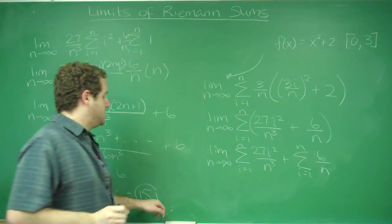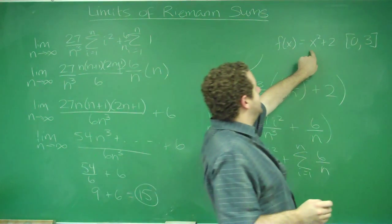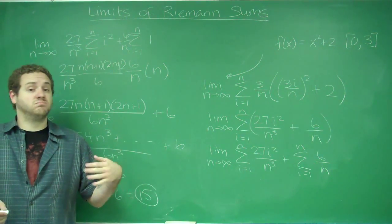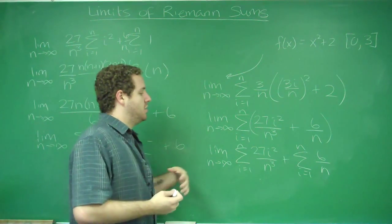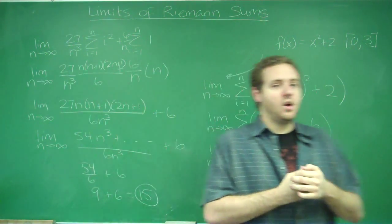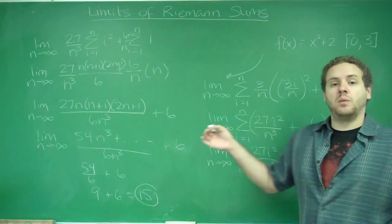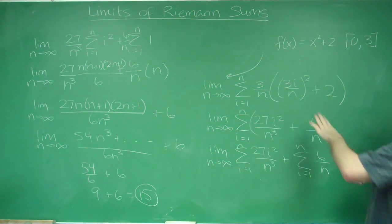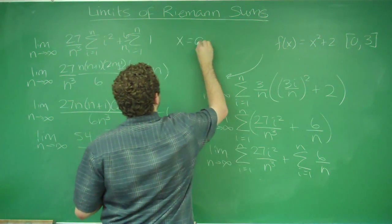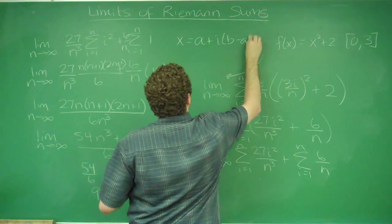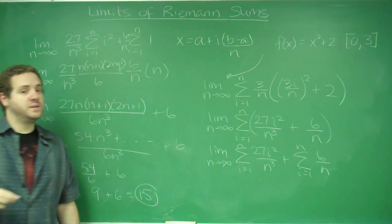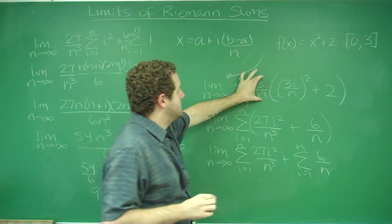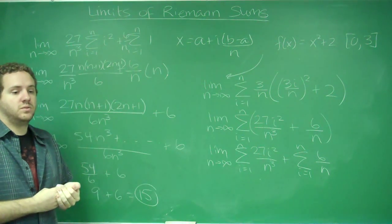You can always check your work by doing the definite integral. If you use the definite integral of x squared plus 2 from 0 to 3, you should get 15 — and you do. Doing the definite integral is a lot easier and faster; however, you're pretty much always going to have a free response problem on your exam where you have to do it the sum way, the long way — the limit of Riemann sums. Remember: use the substitution for x, where x is always a plus i times b minus a over n.